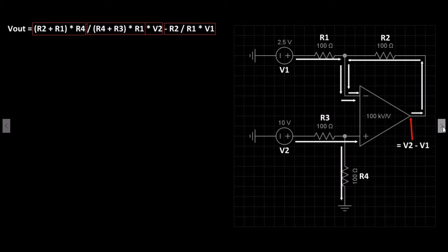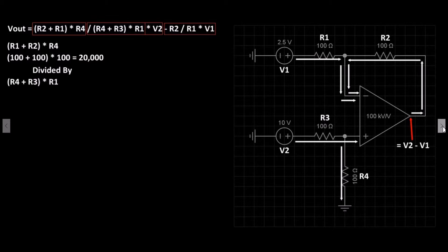So the first part of the formula is (R2 + R1) multiplied by R4. All the resistors are of the same value, so the formula will look like this: 100 plus 100 equals 200 multiplied by R4. This number is divided by the second part: (R4 + R3) multiplied by R1. So the values are 100 plus 100 equals 200.